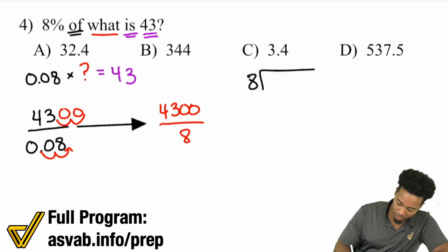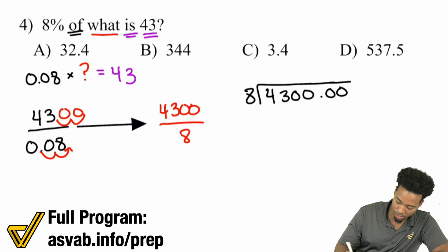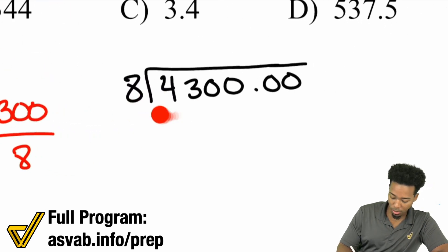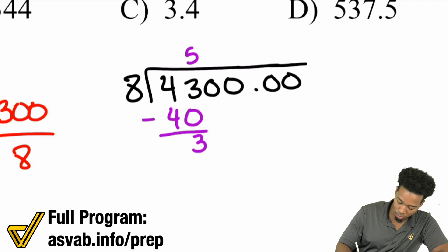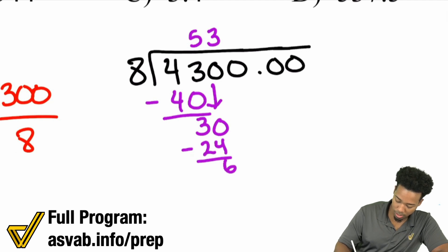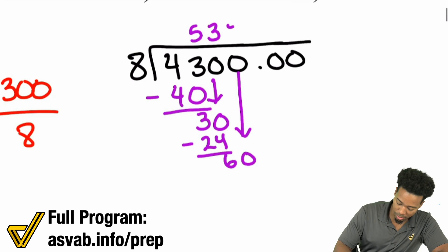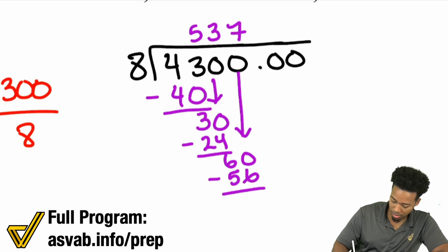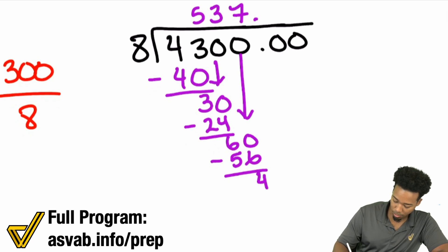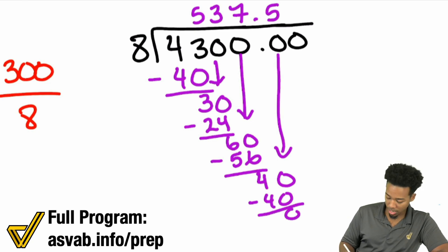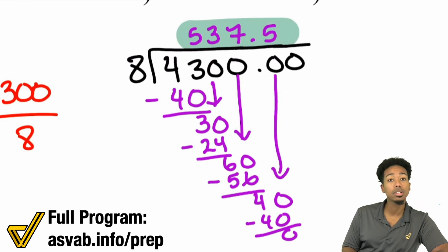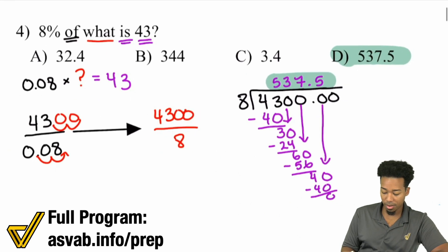8 dividing into 4,300: 8 doesn't go into 4, but 8 goes into 43 five times — 8 times 5 is 40, remainder 3. Bring down the 0 — 8 goes into 30 three times, since 8 times 3 is 24, you get a remainder of 6. 8 goes into 60 seven times since 8 times 7 is 56, remainder 4. Bring down a 0 — 8 goes into 40 five times, and that is clean. So the answer is 537.5.